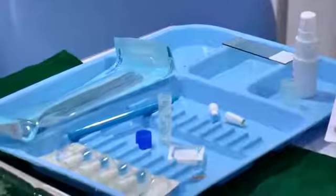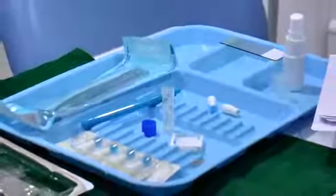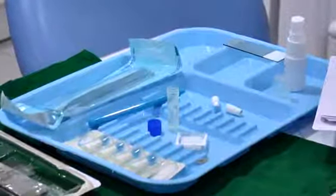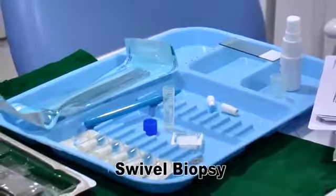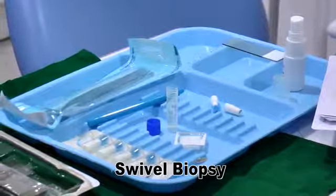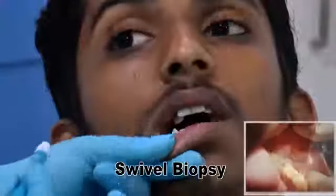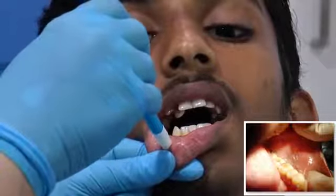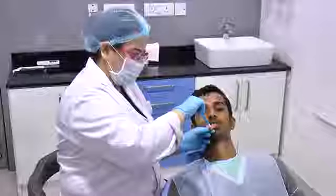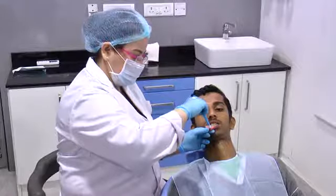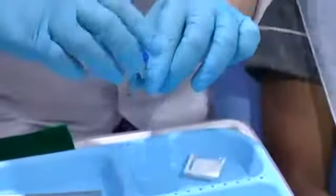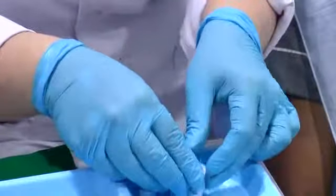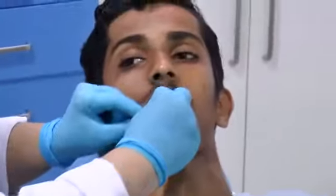Swivel biopsy is used when the brush biopsy is positive or if it is already at a non-healing ulcer state. Support, firm grip and one rotation. Complete 360 degree rotation. Put it in the vial. The thimble goes in the preservative vial and the gel foam is used as a pressure pack for 10 minutes.